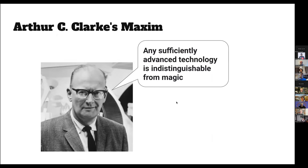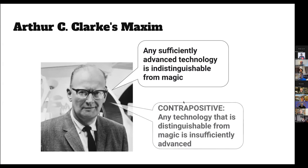Arthur C. Clarke is famous for saying any sufficiently advanced technology is indistinguishable from magic. You guys are logicians, so you're familiar with the contrapositive: that's equivalent to saying any technology that's indistinguishable from magic is insufficiently advanced. So how can we make technology that's sufficiently advanced?